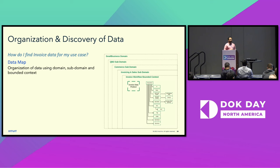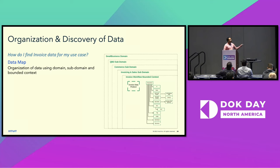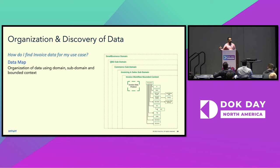At a company like Intuit, just looking at data lake exploration to find an invoice table could return results from multiple domains. For example, Intuit could be charging its own customers and creating invoices, and a QBO company is charging its own customers and creating invoices. So how do we distinguish these two? That is where data map comes into play. Data map is our organization of data using domain, subdomain, and bounded context. In this example, small business is the primary domain, QBO is a subdomain, and under that there are commerce, invoicing, and sales subdomains. Invoice workflow is the bounded context.